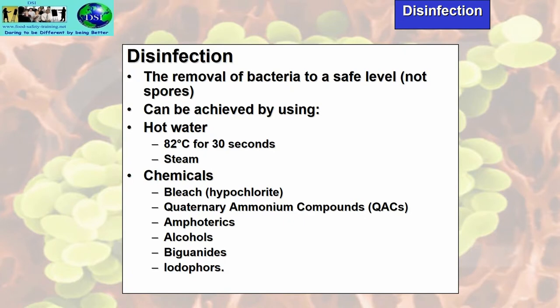Disinfection is the removal of bacteria to a safe level, but it doesn't remove spores and heat-resistant toxins. This can be achieved using hot water — 82 degrees C for 30 seconds — or steam. These are both very good disinfectants and environmentally friendly. Chemical disinfectants are not a preferred option but are available, for example bleach (hypochlorite), QACs (quaternary ammonium compounds), amphoterics, alcohol, biguanides, and iodophores based on iodine.